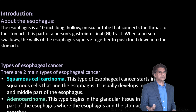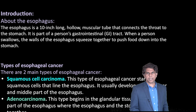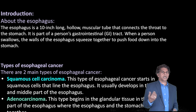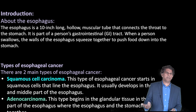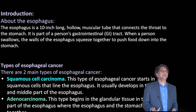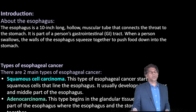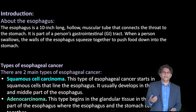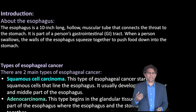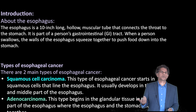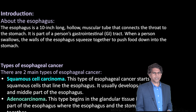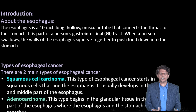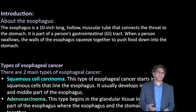There are two types of esophageal cancer we need to know. One is squamous cell carcinoma and the other is adenocarcinoma. Squamous cell carcinoma is most commonly seen in the upper and middle part of the esophagus, while adenocarcinoma is in the lower part. Squamous cell carcinoma starts in the squamous cells that line the esophagus; in adenocarcinoma it begins in the glandular tissue in the lower part.